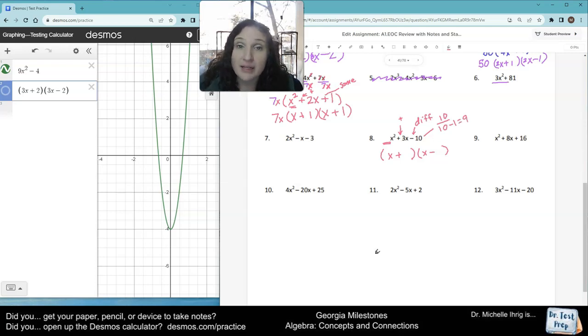Another way I can multiply to get 10 is 5 and 2. 5 times 2 gives me 10. And because I'm subtracting, 5 minus 2 does give me 3. So these are the numbers I need. I need positive 5 and negative 2. So that is now split.